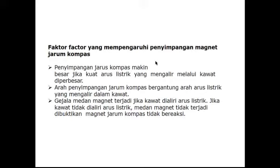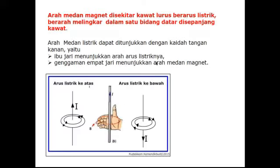Faktor-faktor yang mempengaruhi penyimpangan jarum kompas adalah: pertama, penyimpangan jarum kompas makin besar jika kuat arus listrik yang mengalir melalui kawat diperbesar. Kedua, arah penyimpangan jarum kompas tergantung pada arah arus listrik yang mengalir dalam kawat. Ketiga, gejala medan magnet terjadi jika kawat dialiri arus listrik. Jika tidak dialiri arus listrik, maka medan magnet tidak terjadi dan jarum kompas tidak bergerak.